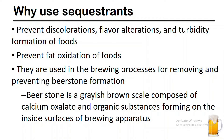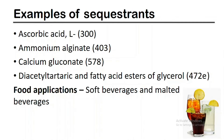They are used in the brewing process for removing and preventing beer stone formation. Beer stone is a grayish-brown scale composed of calcium oxalate and organic substances forming on the inside surface of brewing apparatus. Ascorbic acid, ammonium alginate, calcium gluconate, and diacetyl tartaric and fatty acid esters of glycerol are some examples of sequestrants used in the food industry. Soft beverages and malted beverage processing industries use sequestrants during their processes.